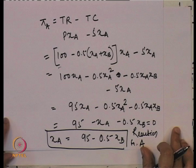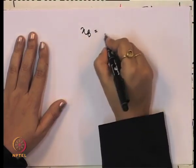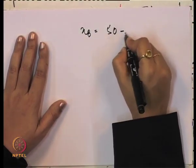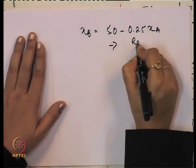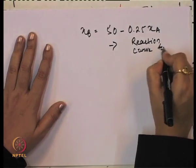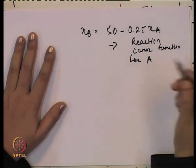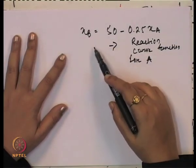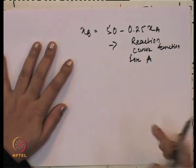Similarly, we find the reaction function of B. The reaction function gives the maximum level of profit to each firm. Following the same steps — finding profit as the difference between total revenue and total cost, maximizing it, and solving for XB in terms of XA — the reaction function of B comes out as XB equals 50 minus 0.25XA.